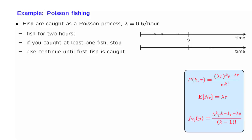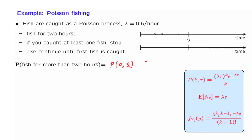Here, for reference, we have all the formulas that we have developed so far. The first question is: what is the probability that you get to fish for more than two hours? You get to fish for more than two hours if and only if you didn't catch any fish during the first two hours. So this is the probability of catching zero fish in the first two hours. We can use this formula, substituting k=0, τ=2, λ=0.6, and plug in the numbers to obtain a numerical answer.